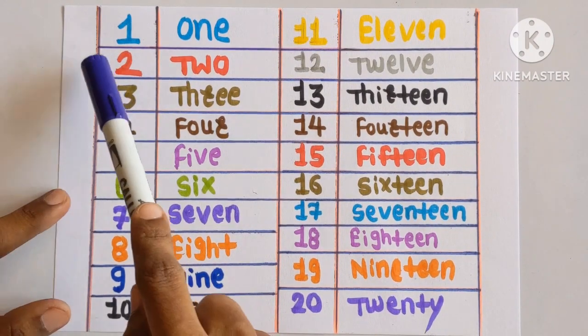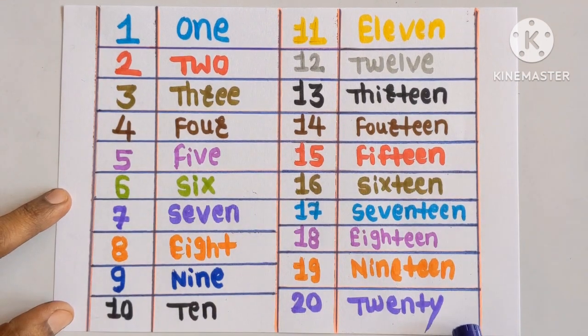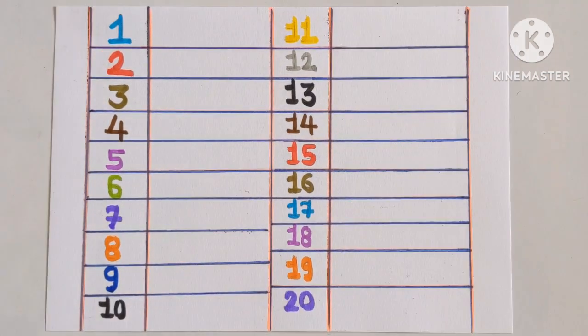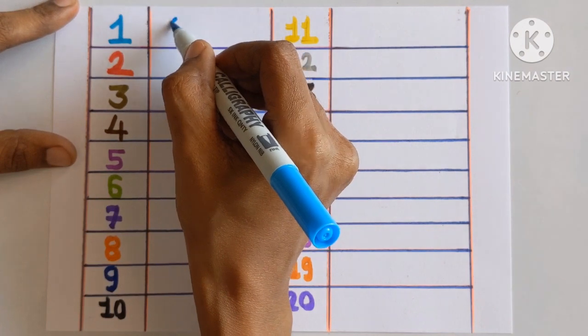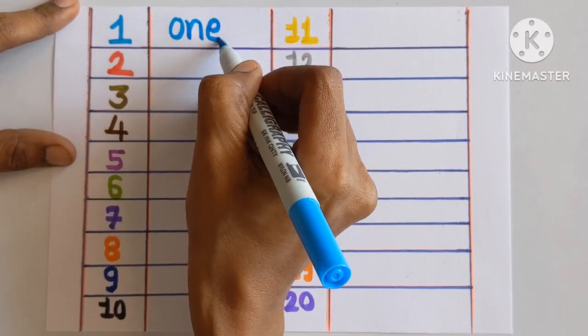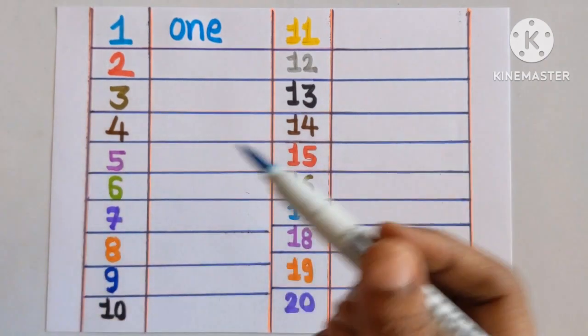Today we will learn 1 to 20 counting with their spelling. Number 1: O-N-E. One. Sky blue color.